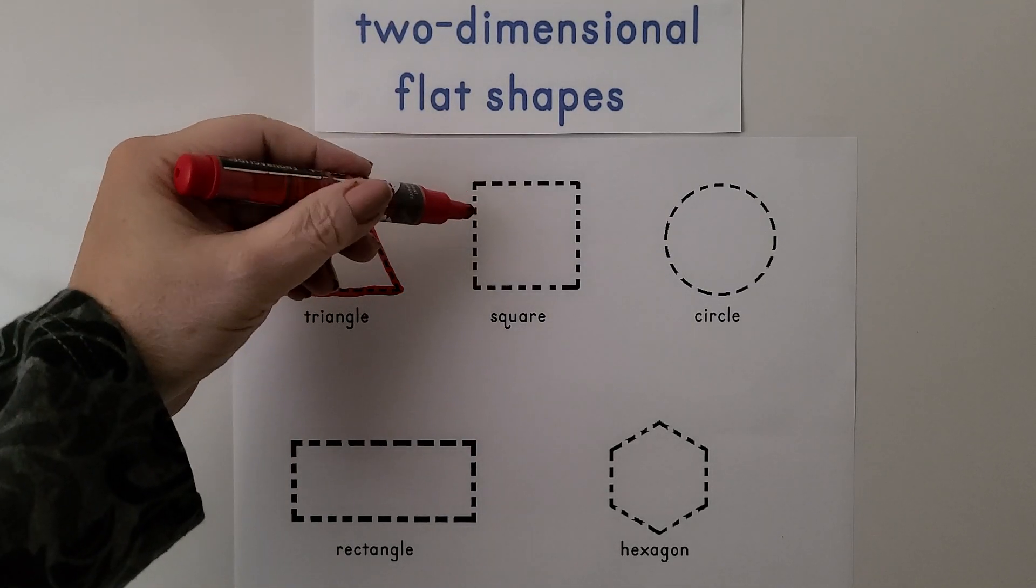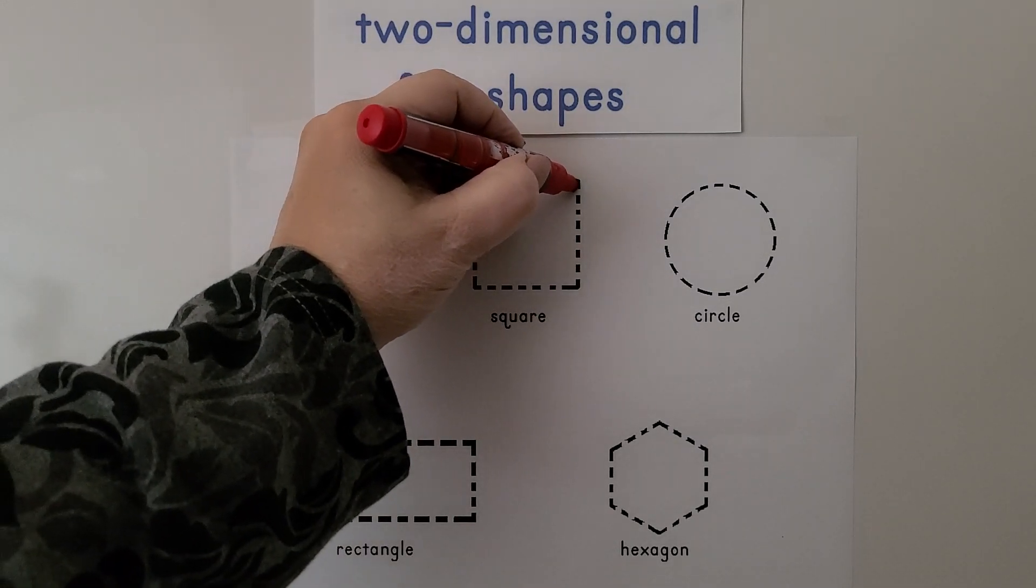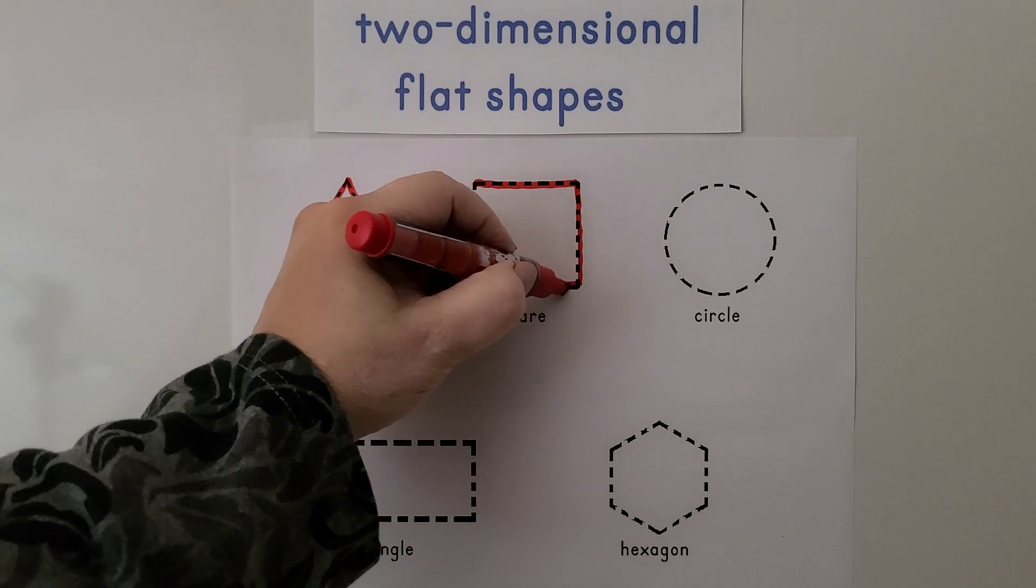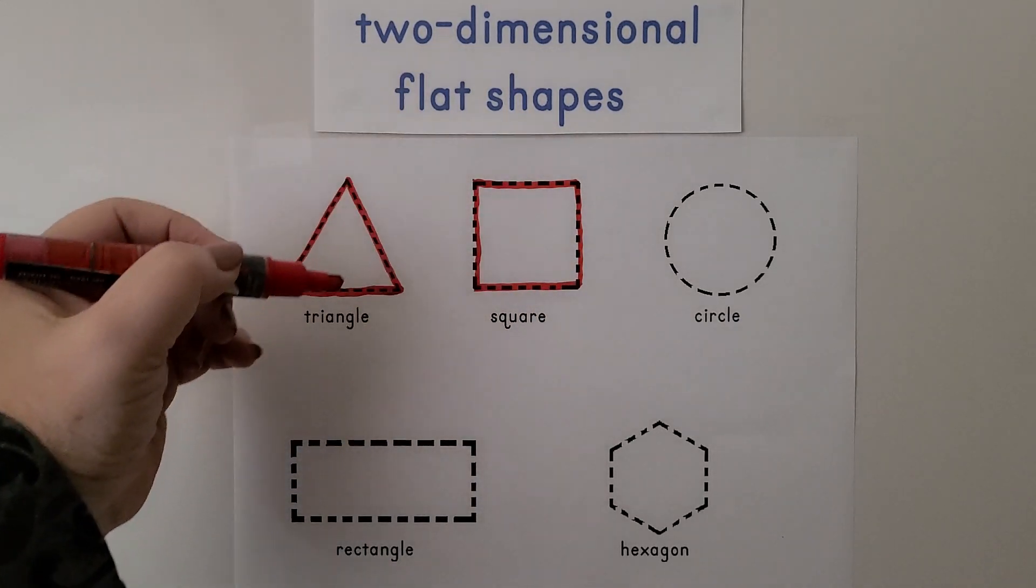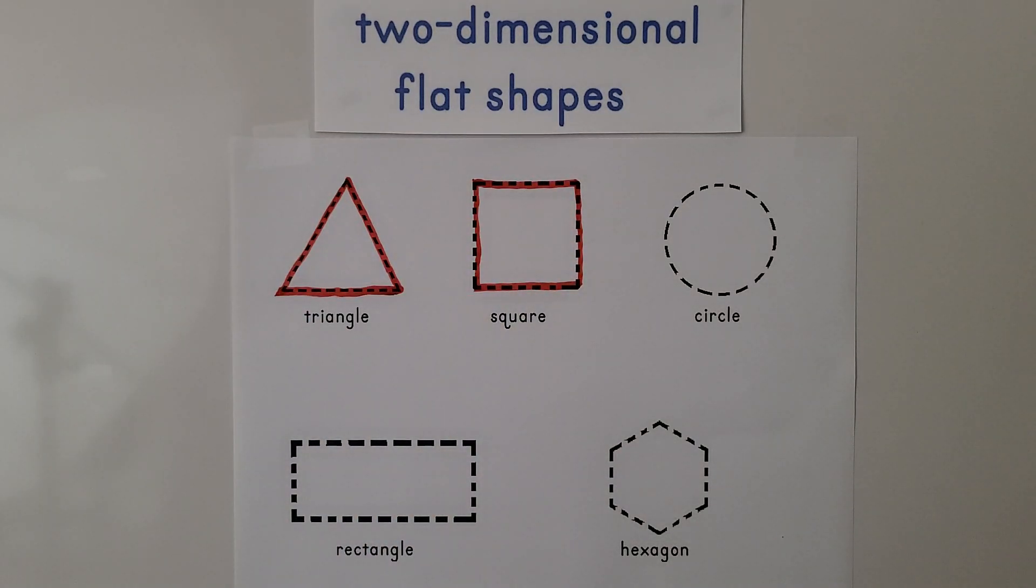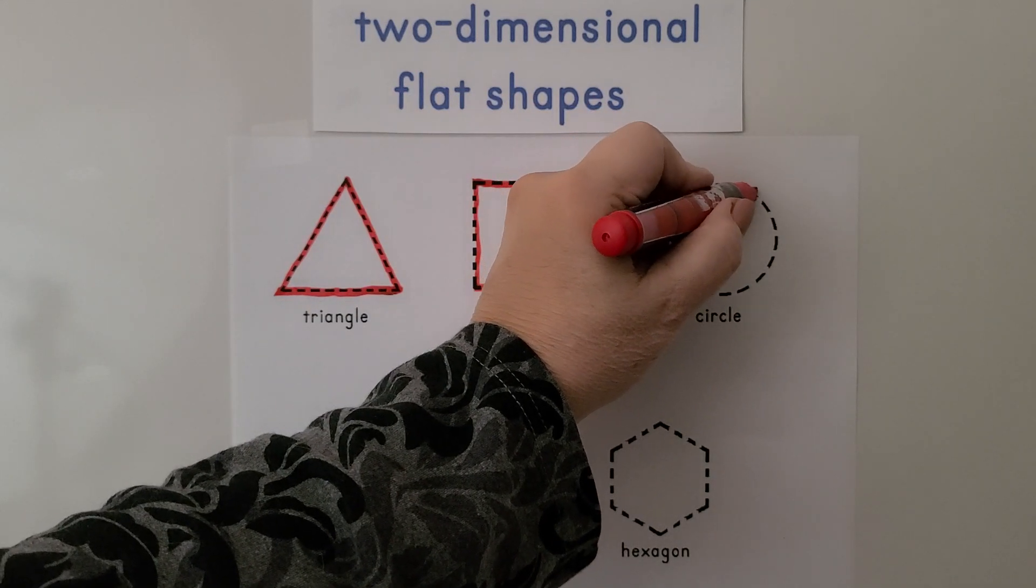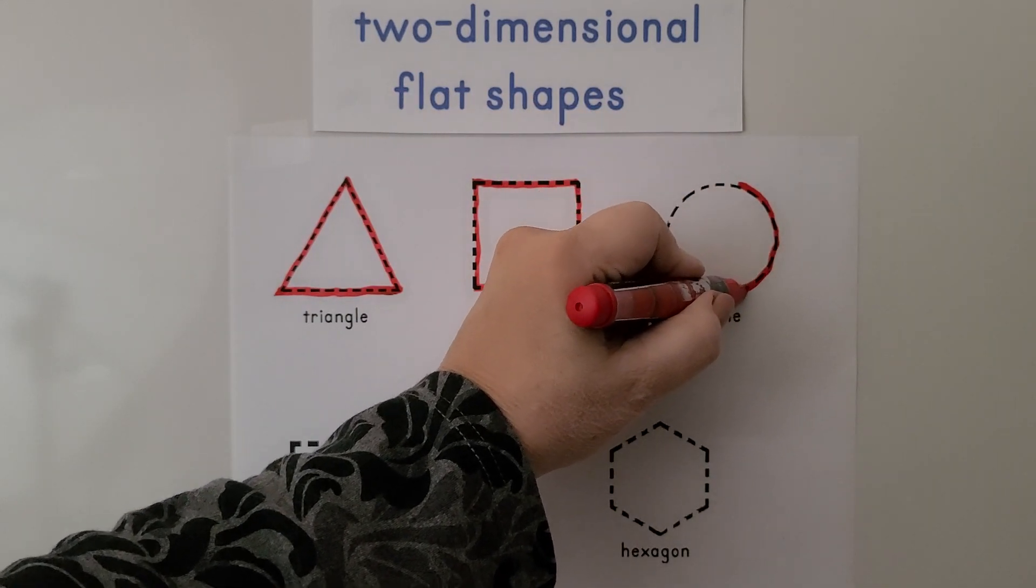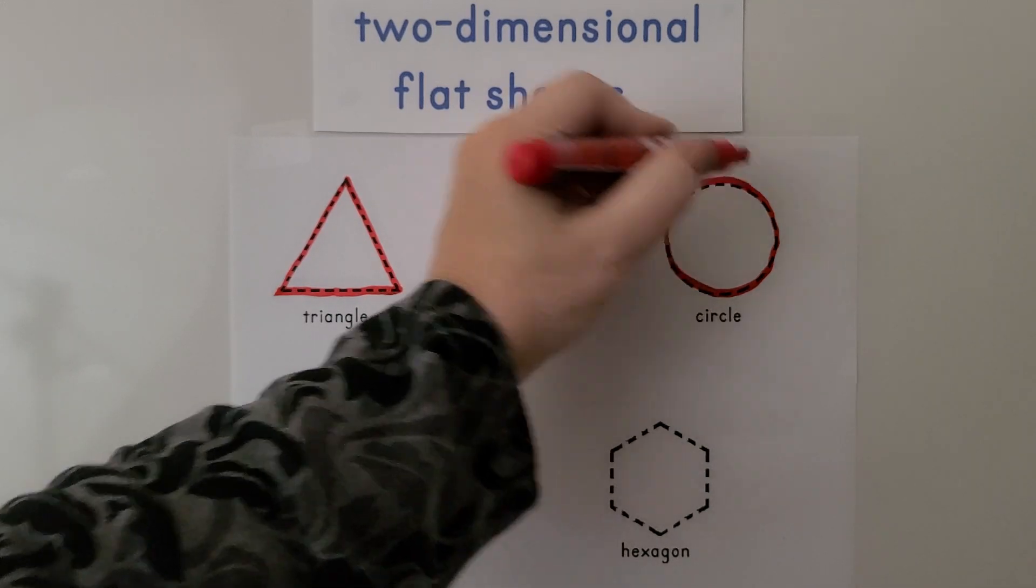Here we have a square. That's a flat shape. We can trace the sides. We have one, two, three, four straight sides and four square vertices. Here we have a circle. It has no corners. We can trace it around. It's one big curve.